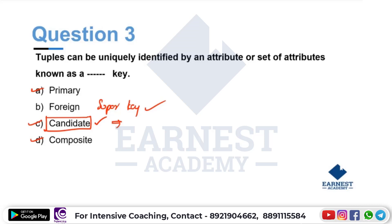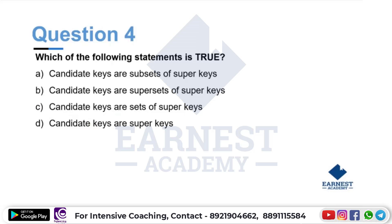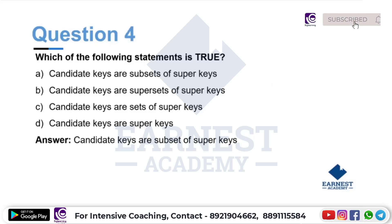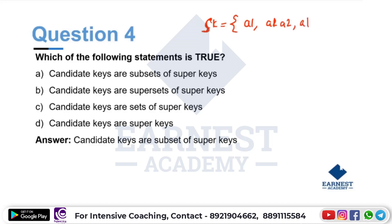Which of the following statements is true? Option A: candidate keys are a subset of super keys. Option B: candidate keys are a superset of super keys. The answer is option A — candidate keys are minimal super keys. For example, {A1}, {A1, A2}, {A1, A3} — A1 alone is the minimal super key.